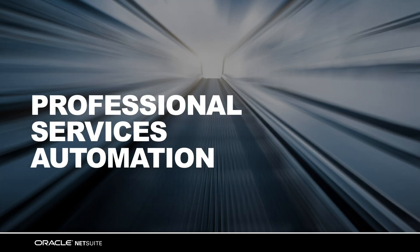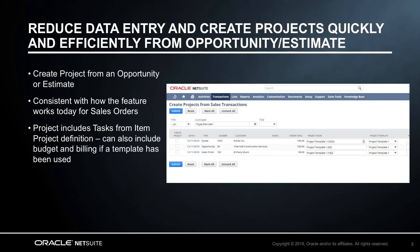We have some exciting new features in the professional services automation area. One of the major benefits for an agency, marketing services, or creative firm having a unified solution like NetSuite is the ability to manage new business in CRM, and then, when the opportunity is won, to create and manage the project in a seamless flow with all information flowing through to the project. In the 19.1 release, we're leveraging the integrated suite to create a new project with the items and task structure or via a template, directly from the opportunity or estimate. This feature will reduce the need to re-enter data as the data flows seamlessly between the two areas, saving time and cost, improving ease of use, and creating greater efficiencies for our customers.